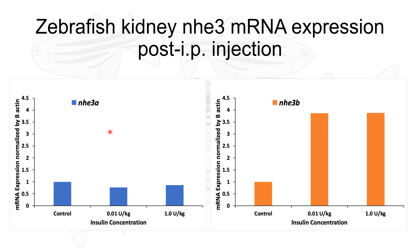After PCR and gel electrophoresis, results were obtained. Normalized by beta actin, NHE3A expression increased slightly as insulin concentration increased. A similar increase in expression and activity was observed for NHE3B from smaller to larger concentrations of insulin. These kidney findings are consistent with prior data showing that increased insulin leads to increased expression and activity of NHE3 in zebrafish kidneys.